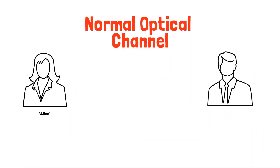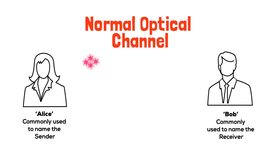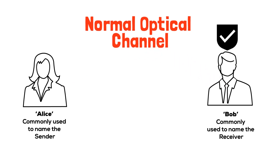Let's take a sender — we'll call her Alice — who sends information across a normal optical channel to a receiver, we'll call him Bob. Alice sends information with a laser in the form of pulses of light, and each pulse contains hundreds of photons, which Bob can detect with his photodetector.